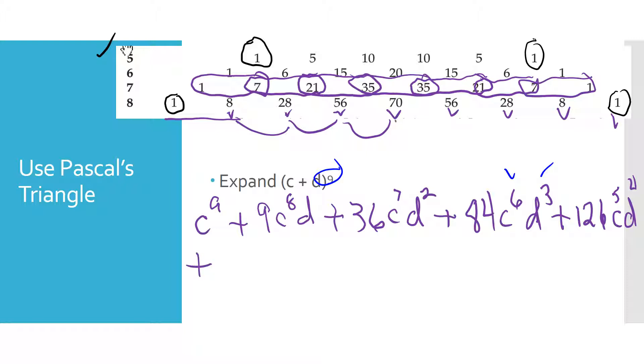let's see, 70 plus 56 is going to be 126. Again, 126. C to the 4th, D to the 5th, plus, 56 plus 28 is going back to 84. 84. C cubed, D to the 6th, notice again, my exponents are totaling 9. 3 plus 6 is 9. C to the 3rd, D to the 6th,